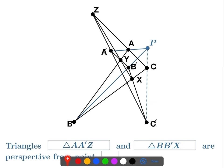So if these two triangles are perspective from a point, we can conclude from Desargues' theorem that the points P, C, and C' are all collinear. We just want to verify they're perspective from a point. We look at the line through A and B — that goes through Y. The line through A' and B' also goes through Y. And ZX also goes through Y.